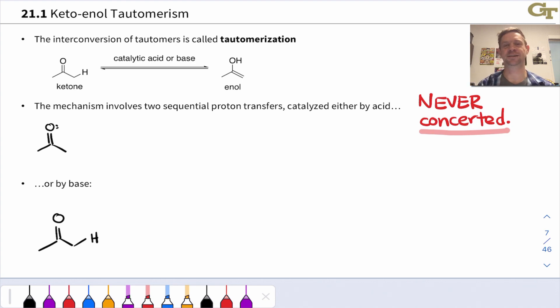As those arrows fade out, I have to say this is never how tautomerization occurs. Never, never, never is it concerted. Never, never, never is it a single step process. The basic problem is that would involve a four-membered transition state: hydrogen, the alpha carbon, the carbonyl carbon, and the oxygen are four atoms that would have to be arranged in a cyclic four-membered ring transition state. That just doesn't happen very often in organic chemistry, and it's one of those things you should avoid like the plague in an introductory course.